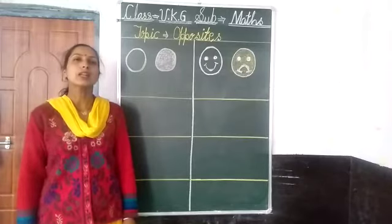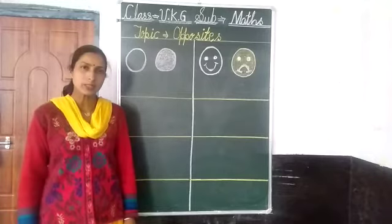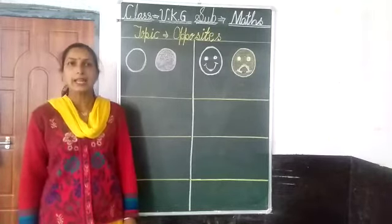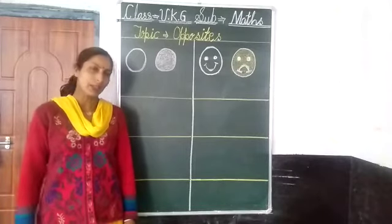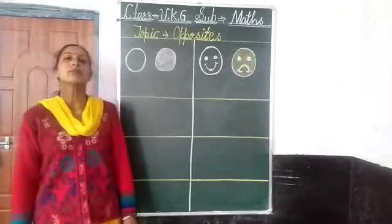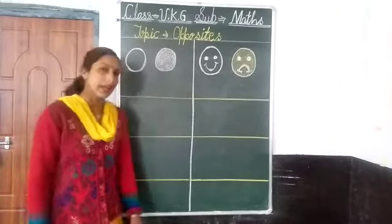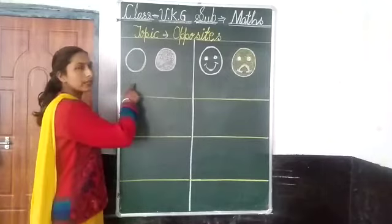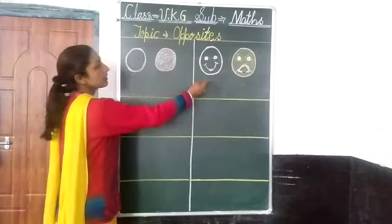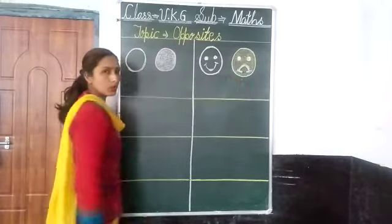Last day we learned long and short opposite words, and big and small, and up and down. Today we will learn some new opposite words like black and white, and happy and sad.